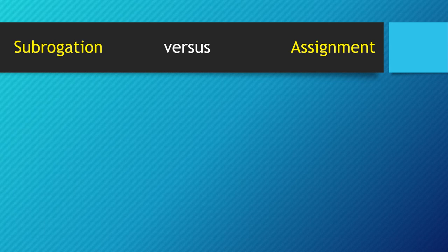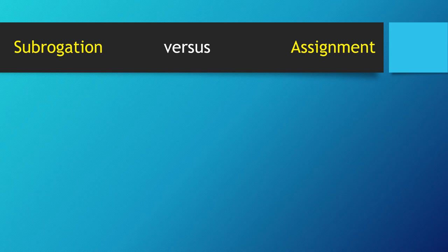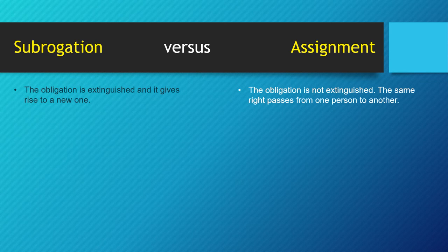Now, let's distinguish subrogation from assignment. In subrogation, the obligation is extinguished, and it gives rise to a new one. While in assignment, the obligation is not extinguished — the same right passes from one person to another.